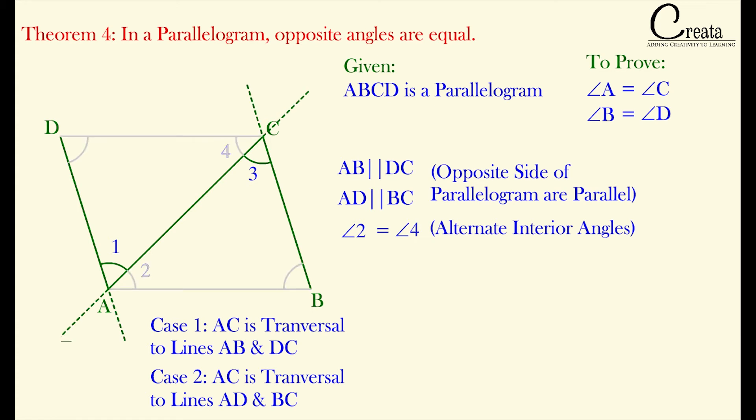Similarly, in the second case where AD and BC are parallel lines cut by the transversal AC, can we say angle 1 is equal to angle 3? Here angle 1 and angle 3 are the pair of alternate interior angles. And we know alternate interior angles are equal in the case of parallel lines.